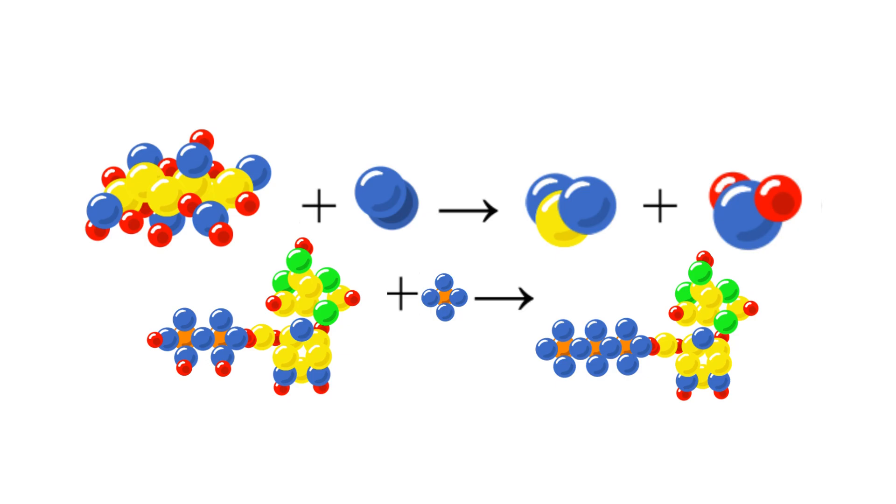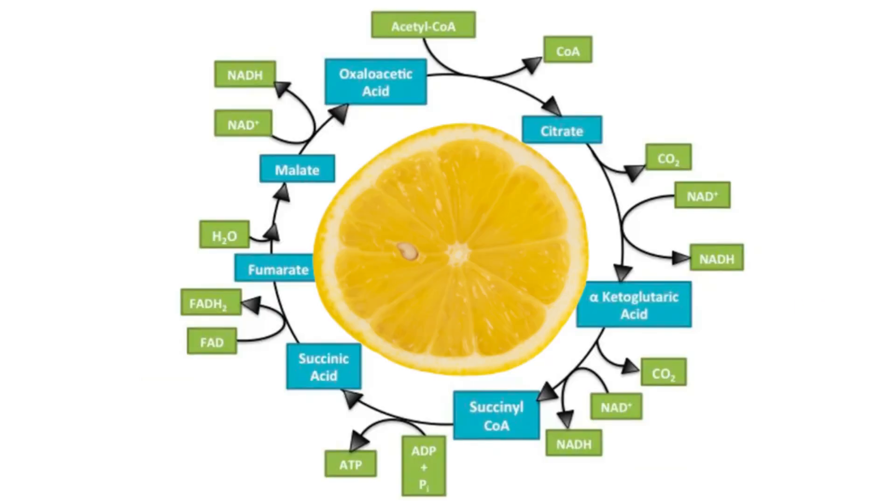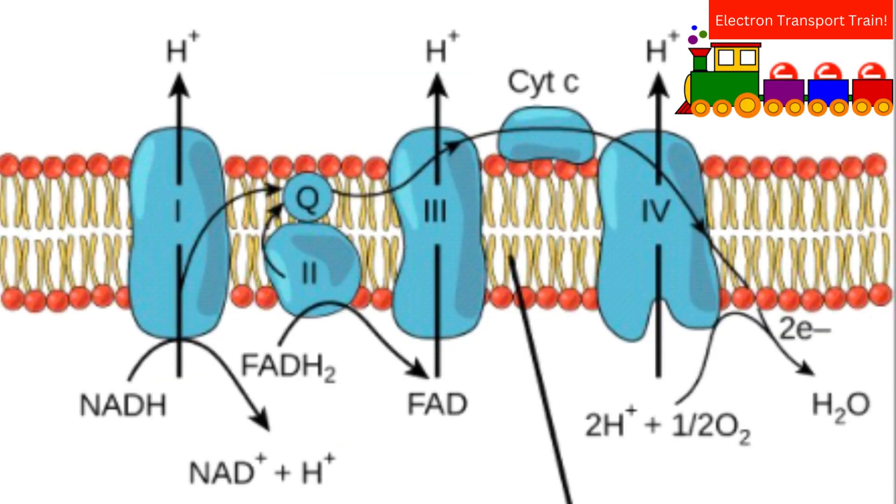The process is split into three parts: glycolysis, the citric acid cycle (also known as the Krebs cycle), and the electron transport chain.